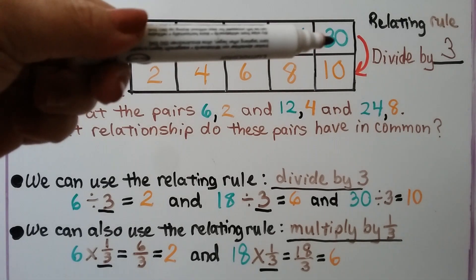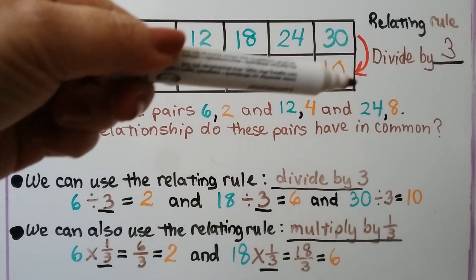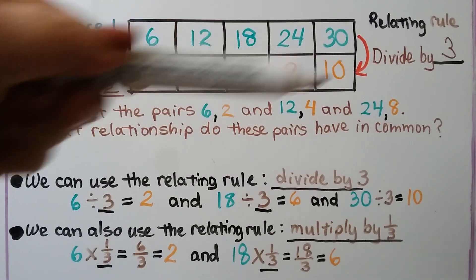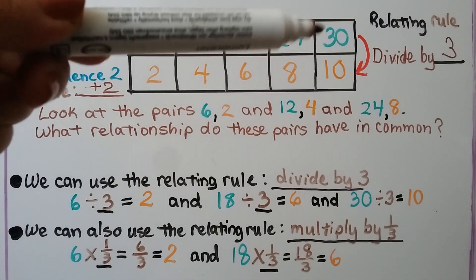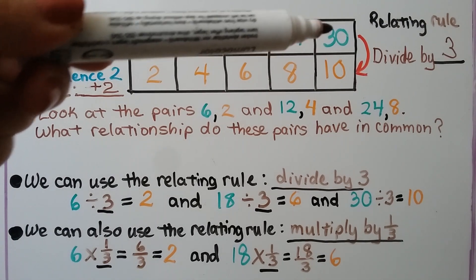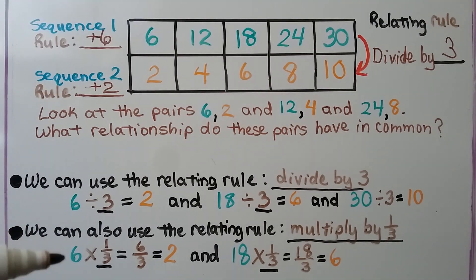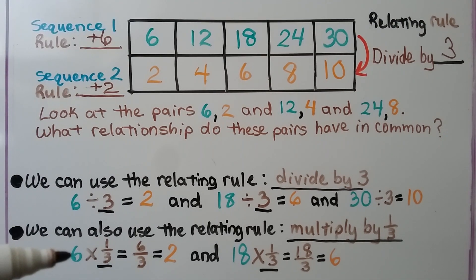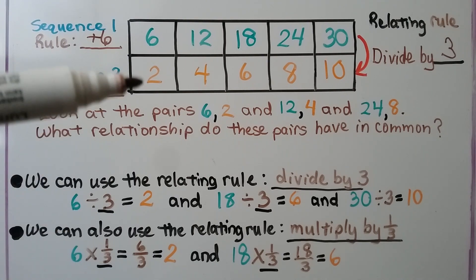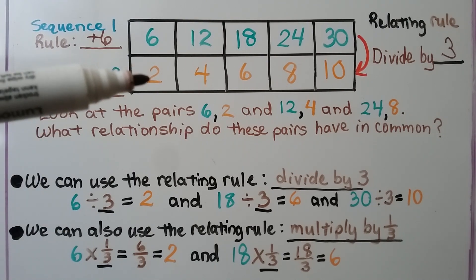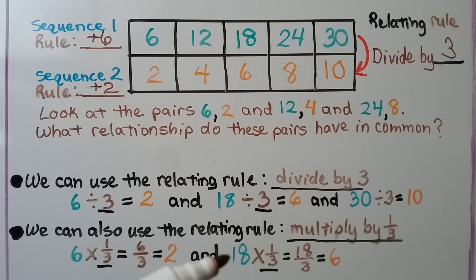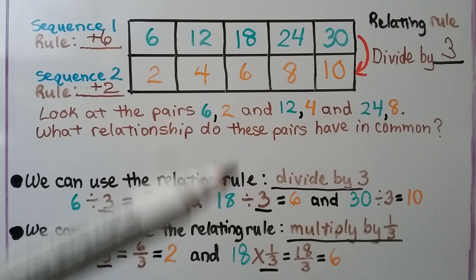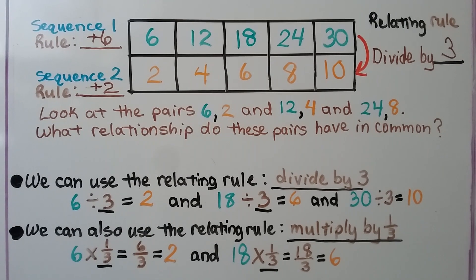We look at the direction the arrow is heading to know which number is first. For example, 18 is the first number and it's going to equal 6.